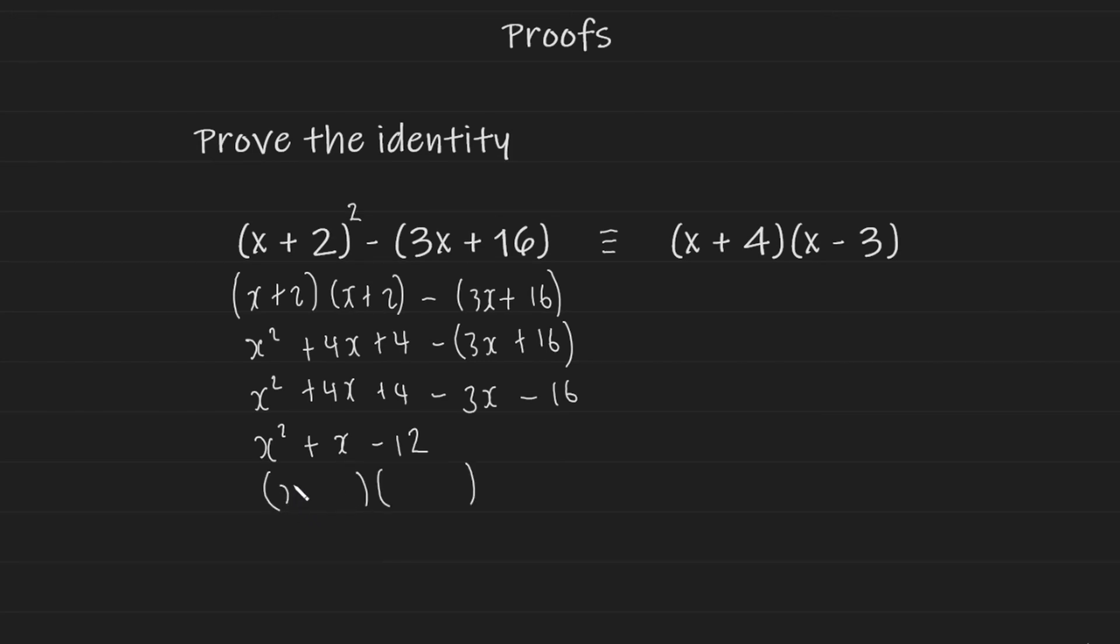And lo and behold, the two brackets are going to be x plus 4 and x minus 3. So now we have shown that the left hand side is indeed equivalent to the right hand side. And you have gone ahead and proven this identity.